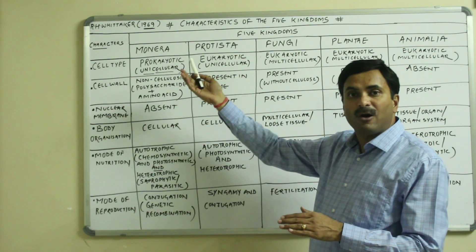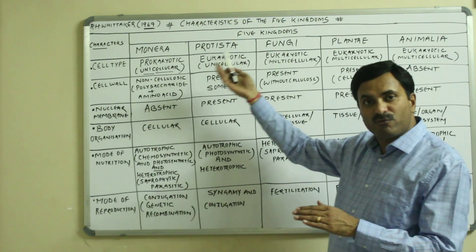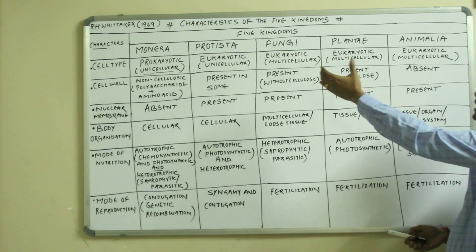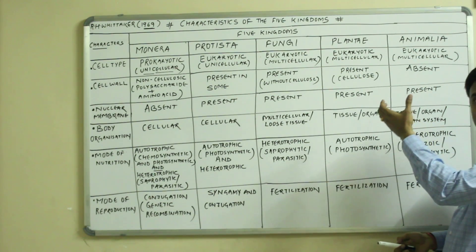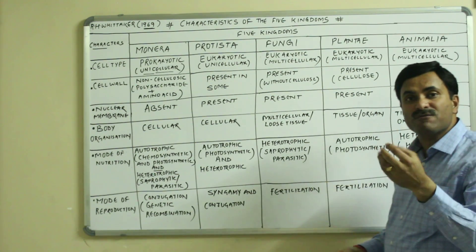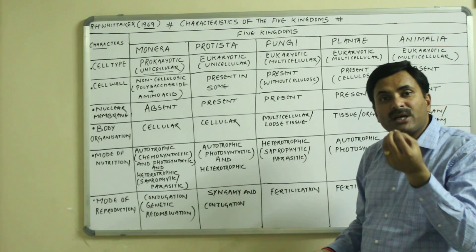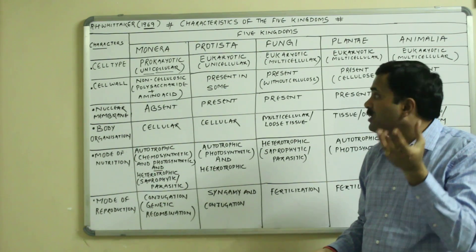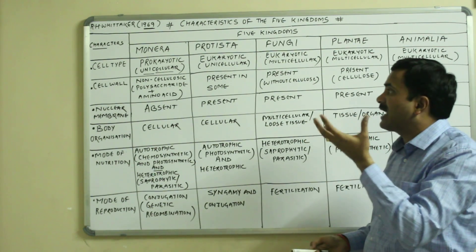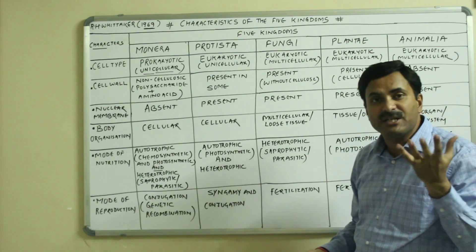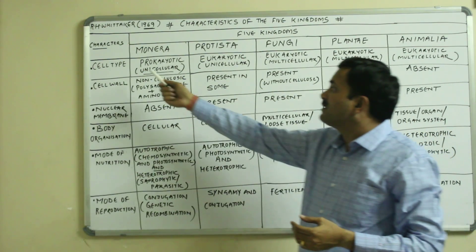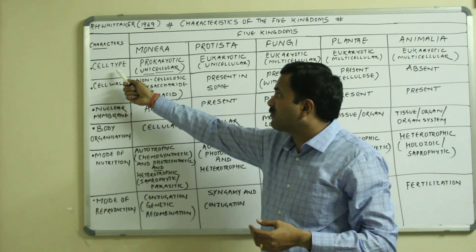Now we are talking about the comparative account of all the five kingdoms. In the later videos we will be talking about Monera, Protista, Fungi, Plantae, and Animalia in detail.